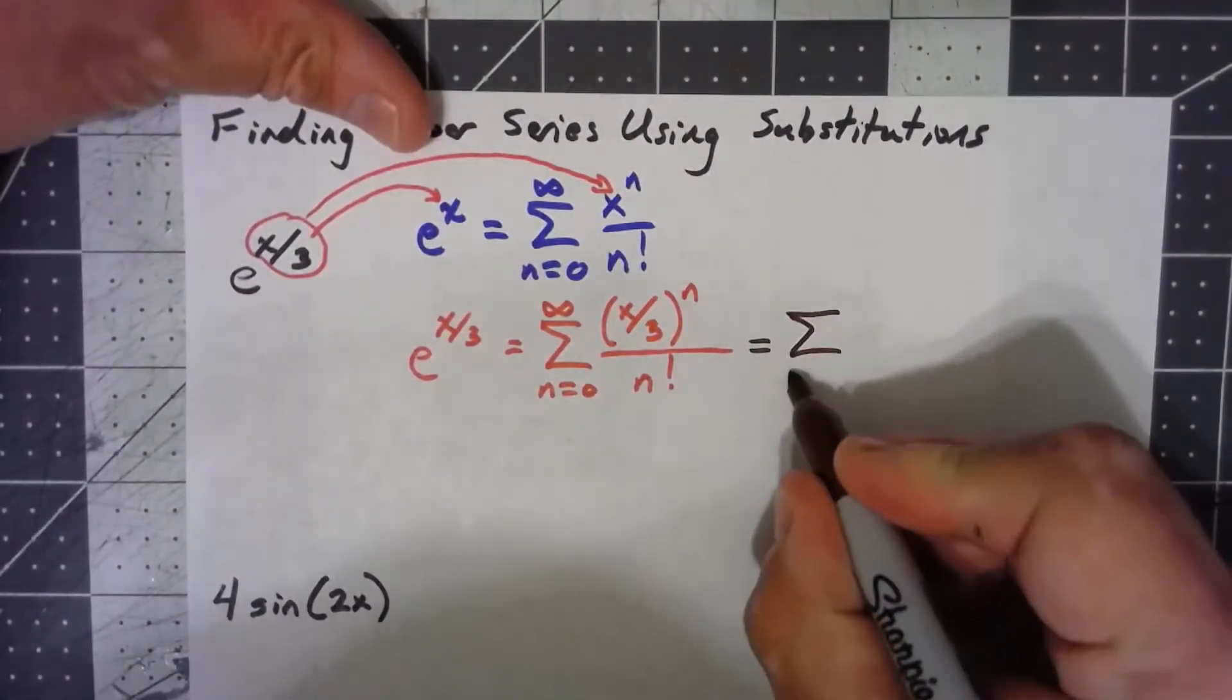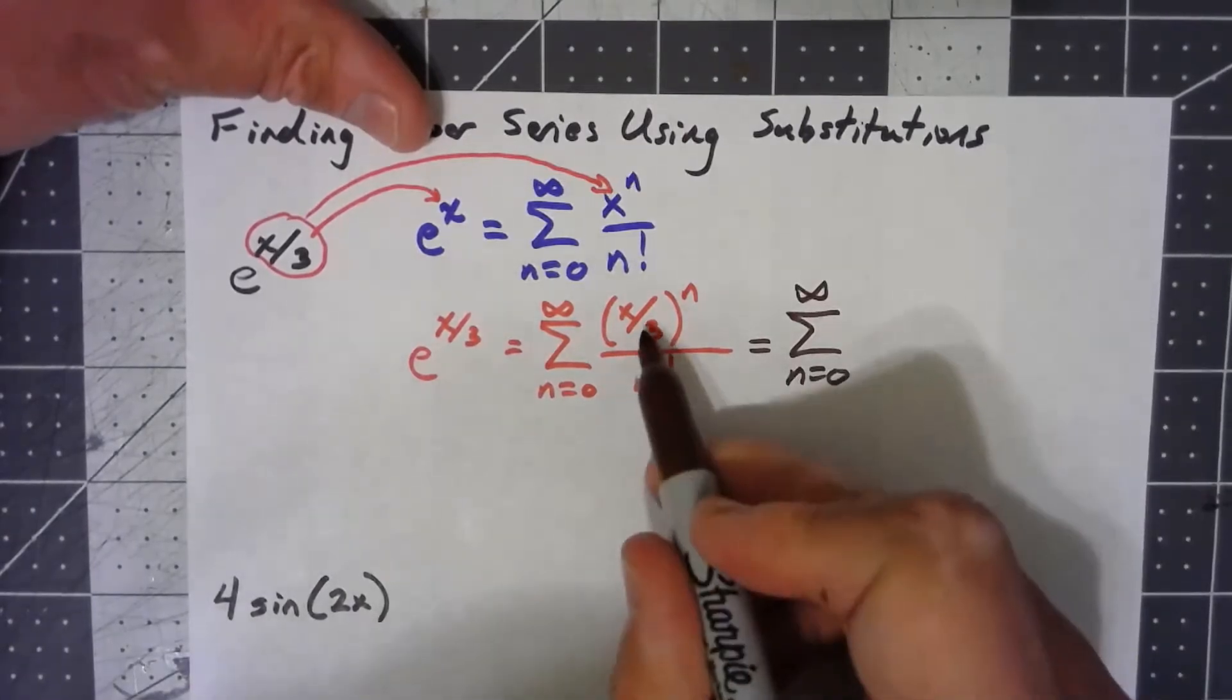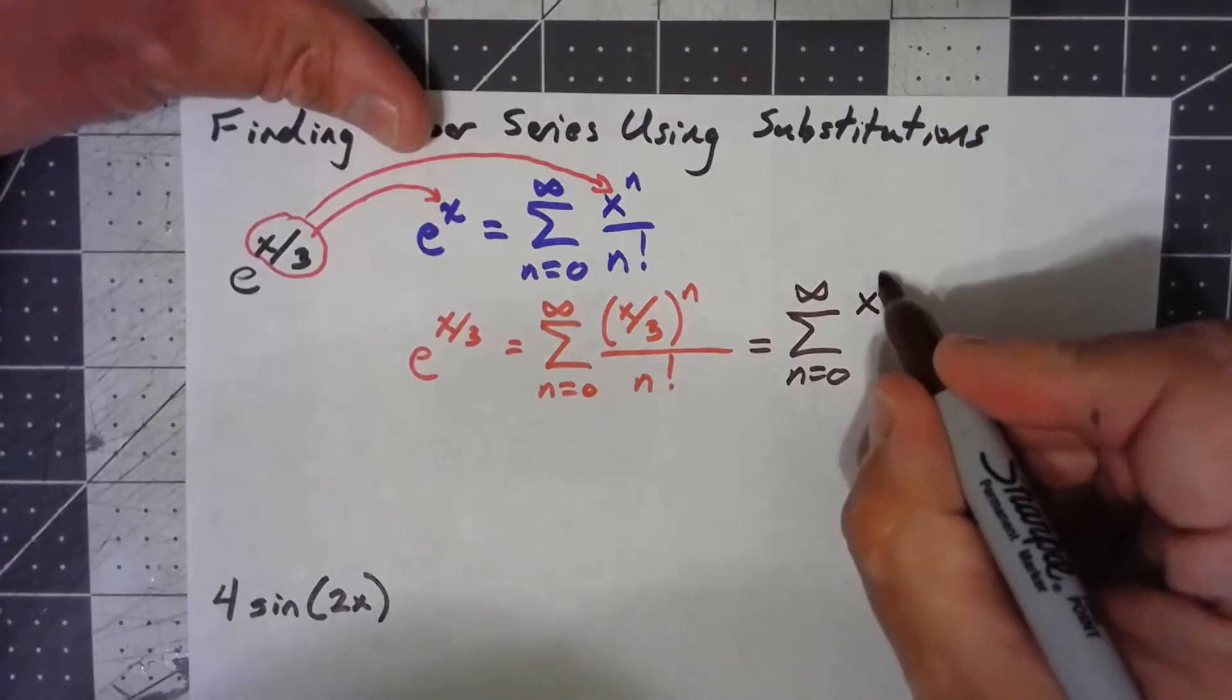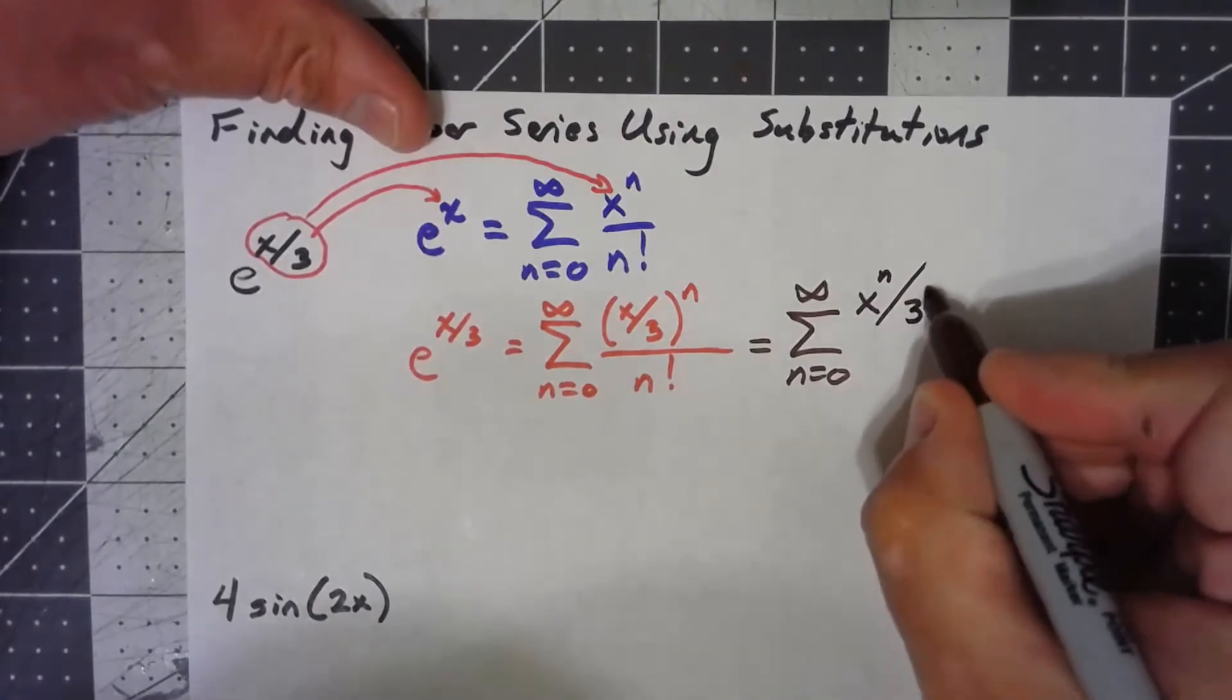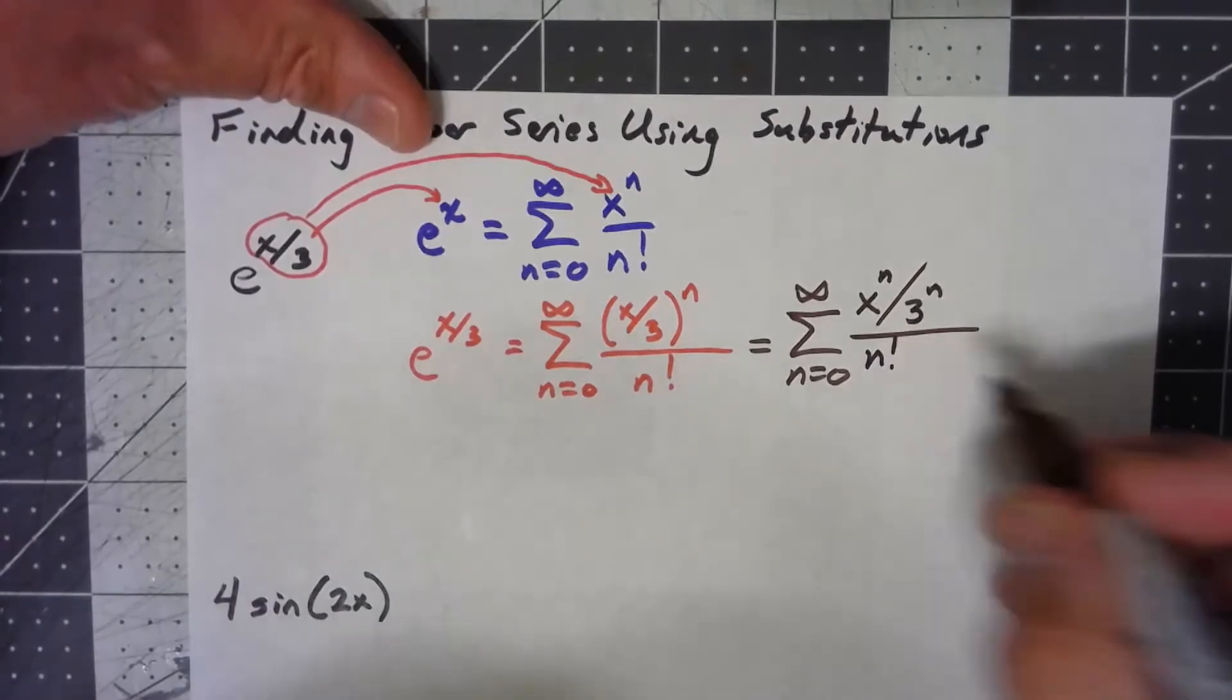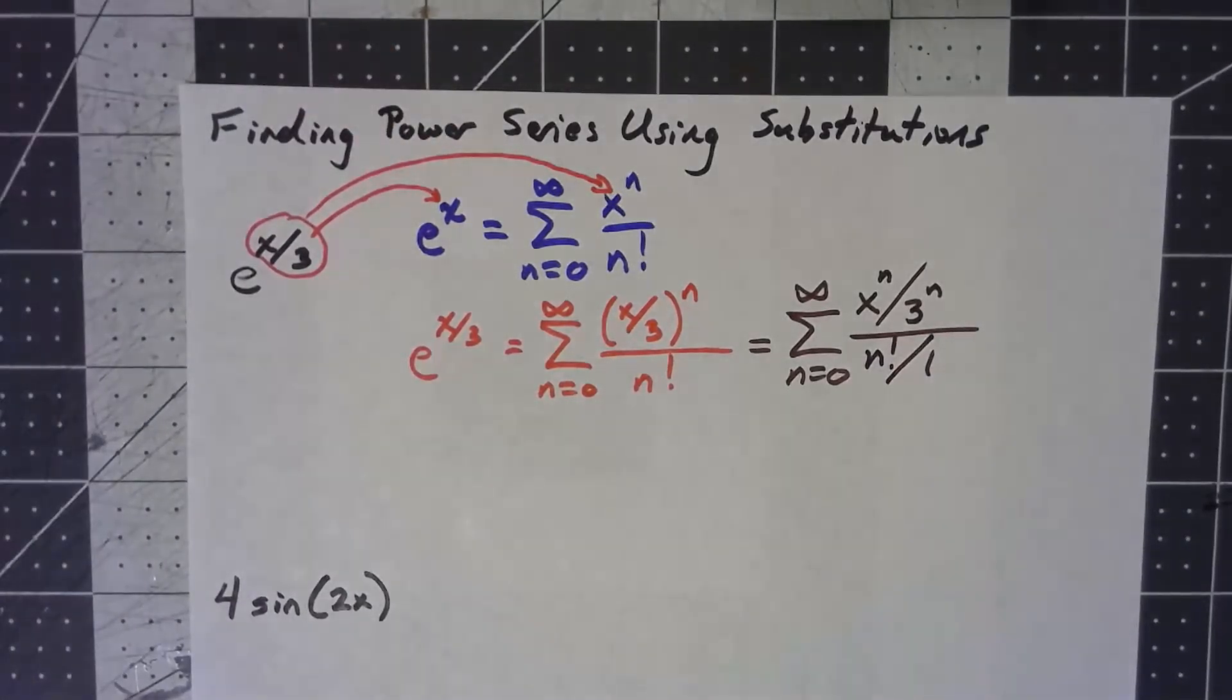I've got the sum from n equals 0 to infinity. x over 3 to the n is the same thing as x to the n over 3 to the n over n factorial. And I can even go ahead and write that as n factorial over 1, just to make it a little easier to see.